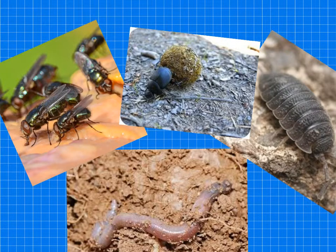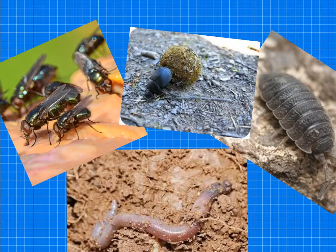When plants and animals die, they will be broken down by groups of organisms known as decomposers. There are two different types of decomposers.